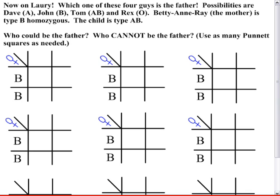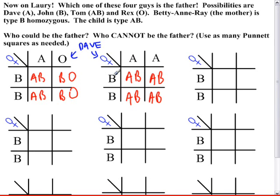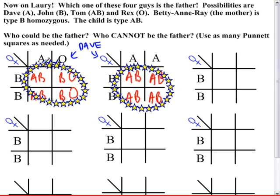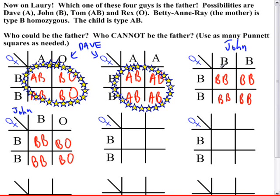The mother is homozygous B, so that is set up for every Punnett square. The first possible father is Dave, blood type A, which could be homozygous A or heterozygous A. With both possibilities set up, two out of four outcomes for homozygous A and four out of four for heterozygous A could produce a type AB child — so Dave is consistent with being the father. Now considering John, type B: whether John is homozygous B or heterozygous B, there are no possibilities of an AB child, so John is definitively ruled out.